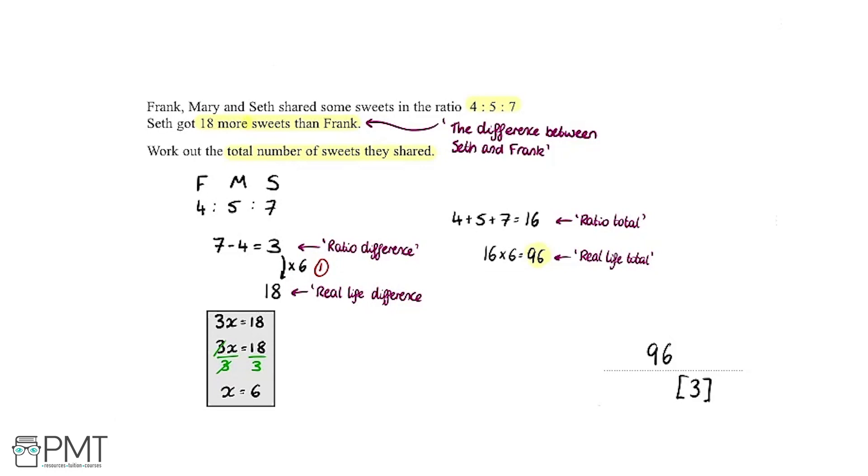Next mark is for this part here. We need to add them all up to get 16 and multiply that by 6 to get the total. You get a mark for this section of working. Then for getting the correct answer 96, we get our third and final mark.